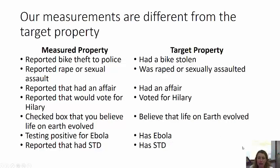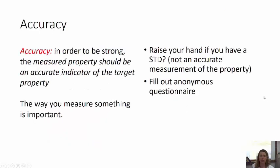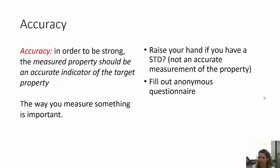Reporting that you have an STD is obviously going to be different than actually having one. So it's important to look at how the surveys are taken, how the questions are asked, to see if the statistics really are accurate. In order for a statistical argument to be strong and reliable, the measured property should be an accurate indicator of the target property. For example, trying to figure out what percentage of UNLV students had STDs by going into an auditorium and asking people to raise their hand — that measured property would not be even close to the target property. A better way would be to fill out an anonymous questionnaire. The way that you measure something is really important.